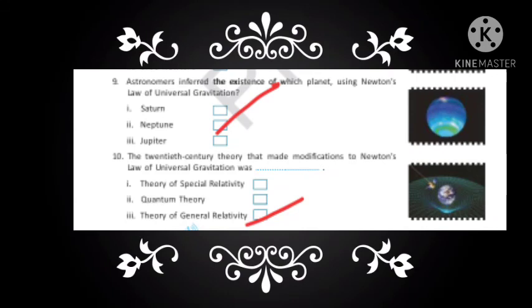Astronomers inferred the existence of a planet using Newton's law of universal gravitation. Can you tell me the name of that planet? It is Neptune.